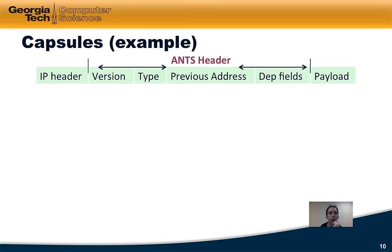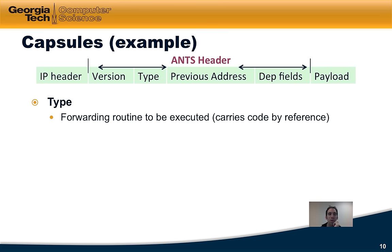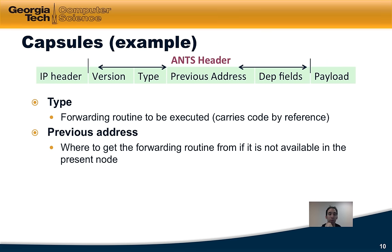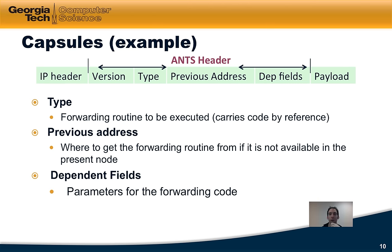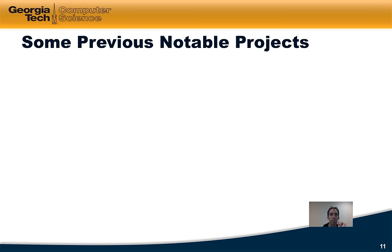Capsules expand the existing packet header. In addition to the regular IP header and payload, you would have an active networking header. This particular one was the ANTS header, developed at MIT. This header had a few additional fields: the type field specified the forwarding routine to be executed, referenced by code; the previous address told the node where to obtain the forwarding routine if it wasn't available on the present node; the dependent fields allowed the packet to pass parameters into the code; and then there was the payload itself.